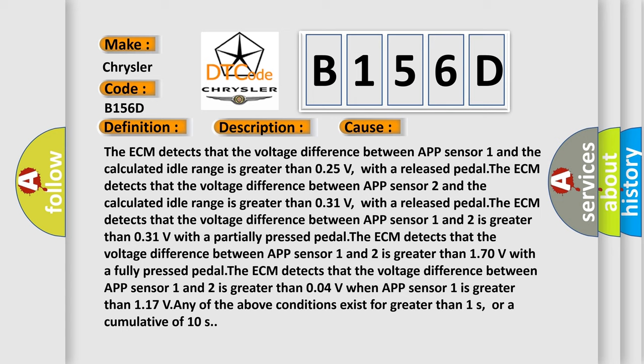With a fully pressed pedal, the ECM detects that the voltage difference between APP sensor 1 and 2 is greater than 0.04V when APP sensor 1 is greater than 1.17V. Any of the above conditions exist for greater than 1s or a cumulative of 10s.